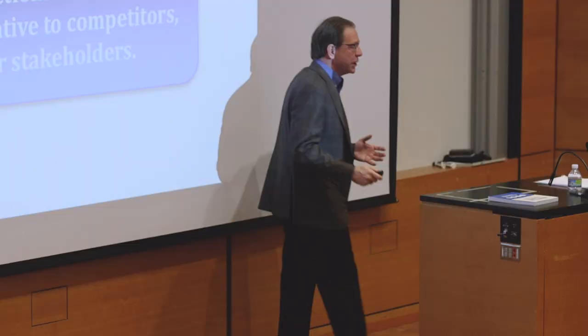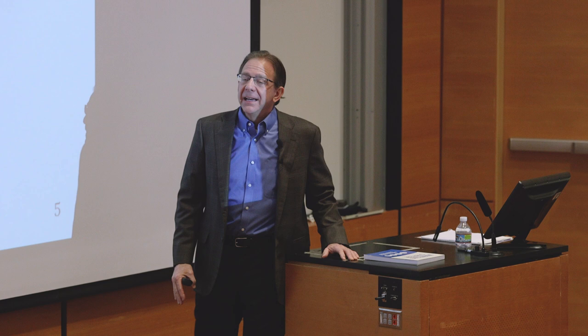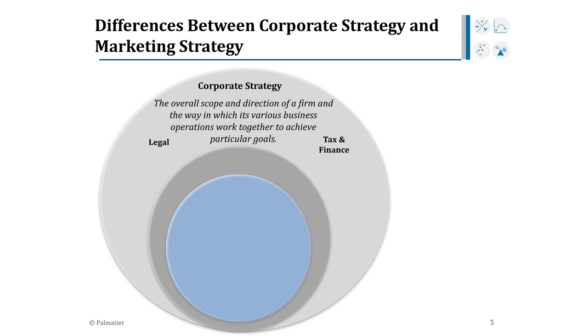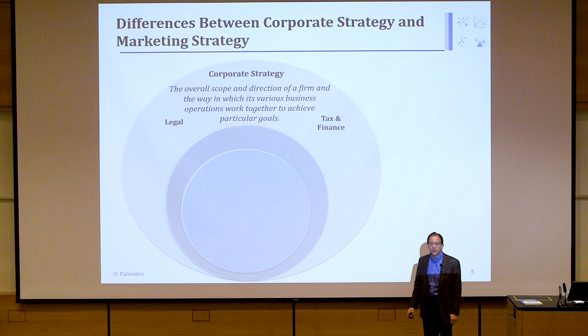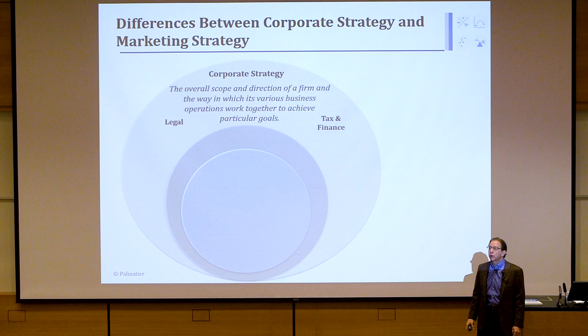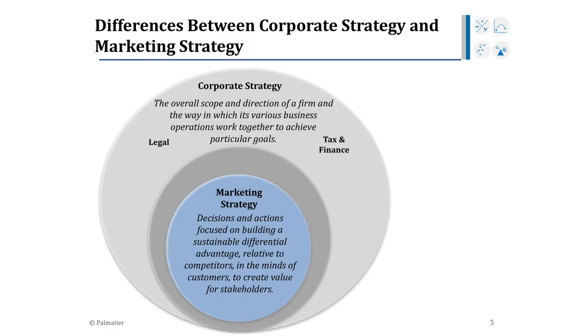A question that often comes up: how is marketing strategy different from corporate strategy? Corporate strategy concerns the overall scope and direction of the firm and the way its various business operations work together to achieve particular goals — they're not getting down to the customer level. Marketing strategy, by contrast, is customer-centric. The sales and marketing organization is very much focused on marketing strategy, but other groups like HR, operations, and R&D work for both.